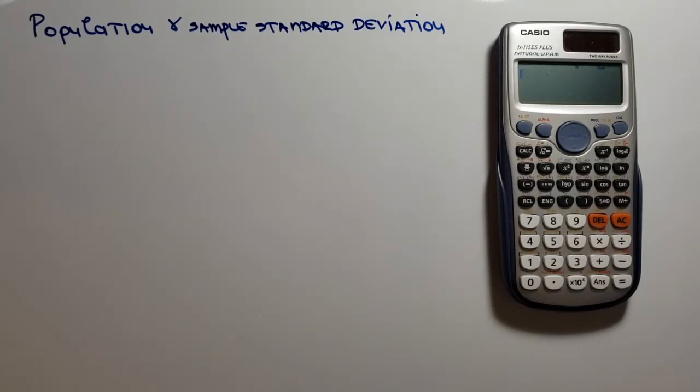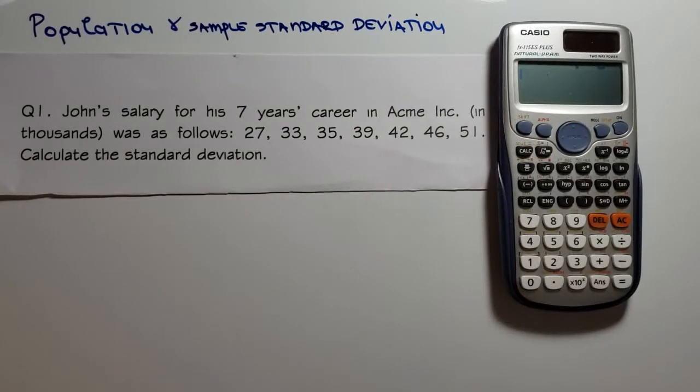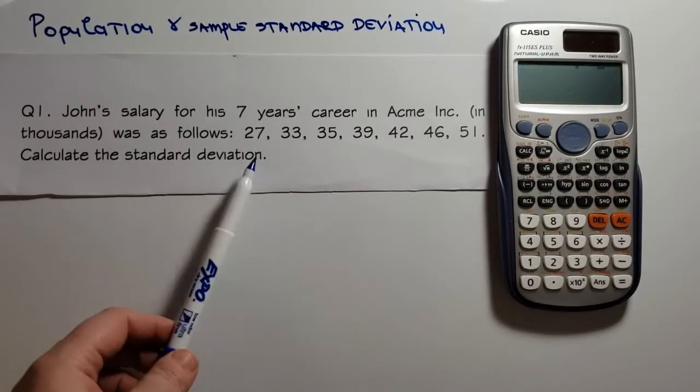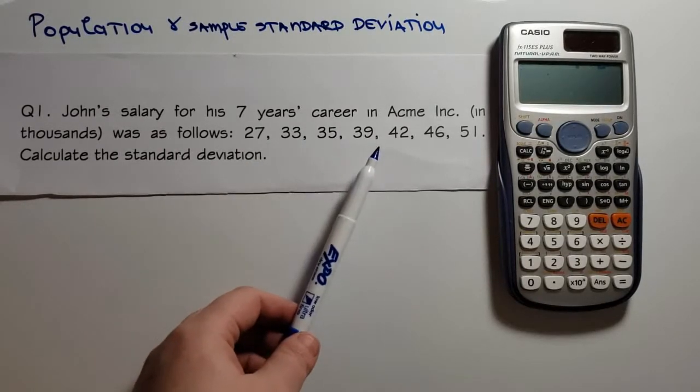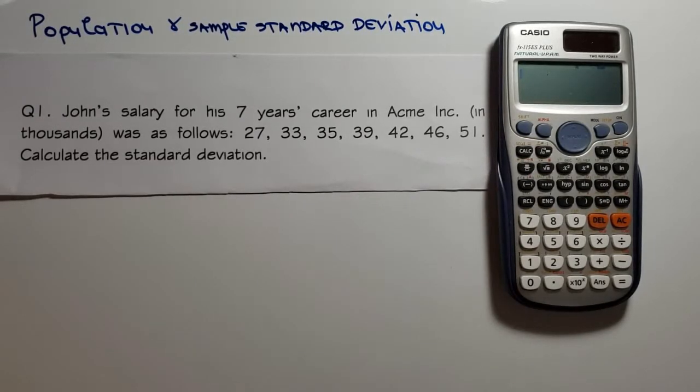Now let's do some problems. Question number one: John's salary for his seven years career in ACME Inc. in thousands was as follows: 27, 33, 35, 39, 42, 46, and 51 thousands. Calculate the standard deviation.